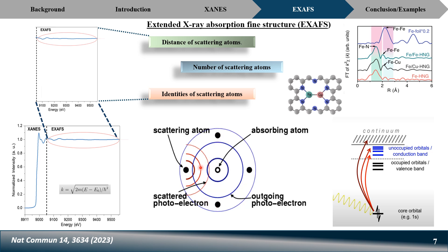The excited electron wave disturbs the electron density of neighboring atoms, depicted here in red. This red wave interferes with the signal of the absorbing atom. This interference is what we observe in the EXAFS spectra: constructive interference gives maxima peaks and destructive interference gives minima peaks. If there are no neighboring atoms — like a noble gas — the spectrum is flat. In condensed matter, neighboring atoms are always present, giving maxima and minima.